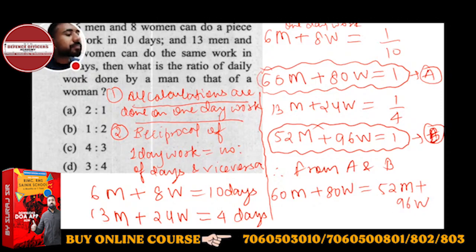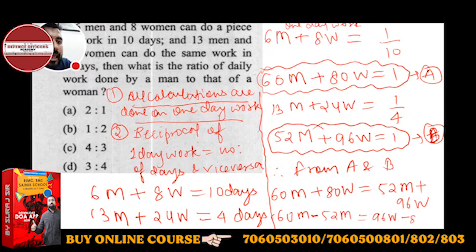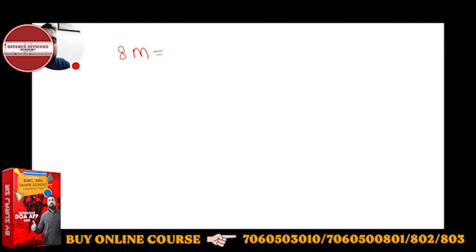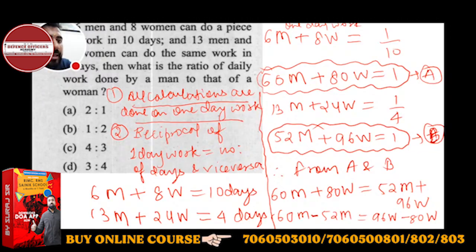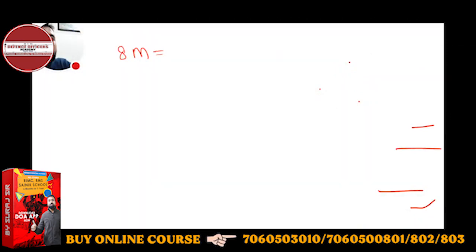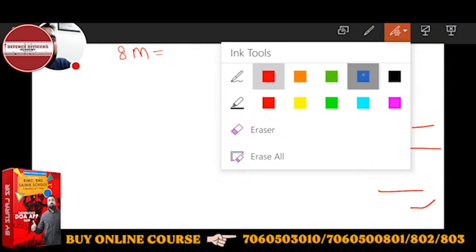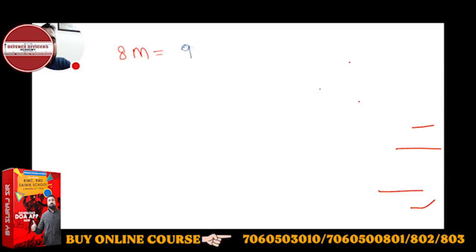Now just solve this. Bring men to one side: 60M − 52M = 96W − 80W. So 60 − 52 = 8M, and 96 − 80 = 16W. Therefore 8 men = 16 women.